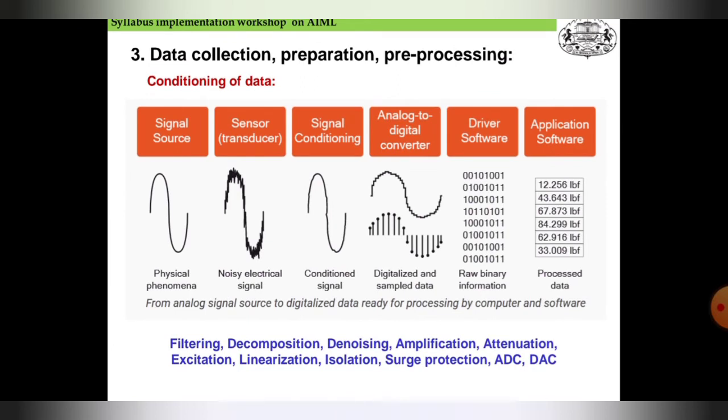We convert from analog to digital converter using ADC to DC converter. We use this to convert the signals. It plays a very important role to convert all these signals using analog to digital converters. The data will be digitalized and sampled data just for processing.